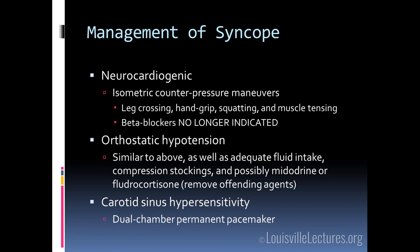For orthostatic hypotension, whenever possible reverse it with fluids, reduction of blood pressure medications and diuretics, and compression stockings. In the hospital we have knee-high ones, which are poorly fitted, but for patients with conditions like Shy-Drager syndrome you really want thigh-high compression stockings for greater venous return. Medications such as midodrine or fludrocortisone may be needed for those whose blood pressure cannot otherwise be maintained. For carotid sinus hypersensitivity, these patients need a pacemaker — a dual-chamber permanent pacemaker is what will assist them the most.